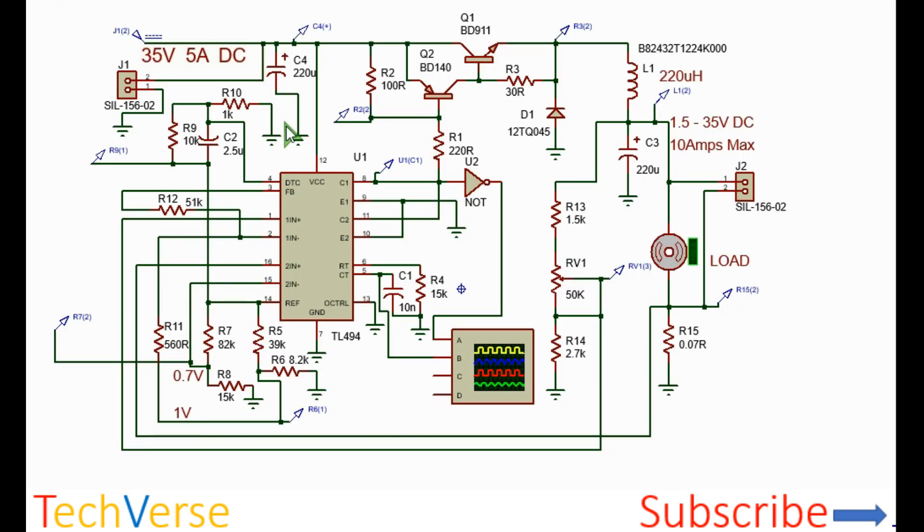Let's go through the schematics. At the input you have your 35 volts or more DC. It can be 35 volts up to 50 volts and at least 5 amperes. This is the input coming off the transformer and the output to the load, a simple 12V DC motor.